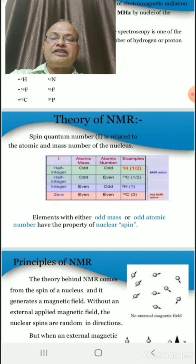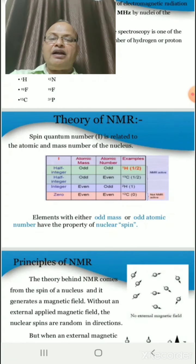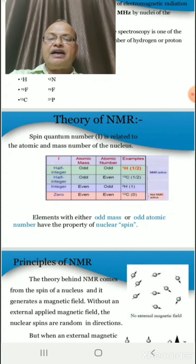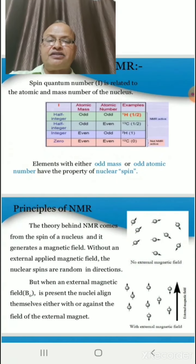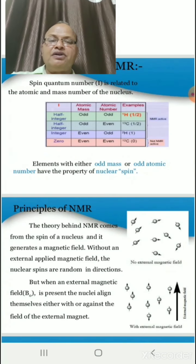Without an external applied magnetic field, the nuclear spins are random in directions. They can go here and there.